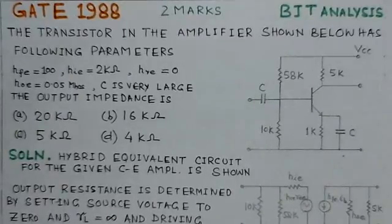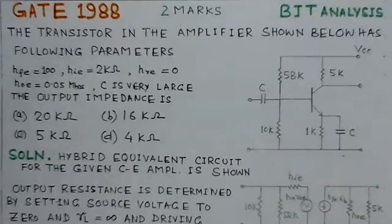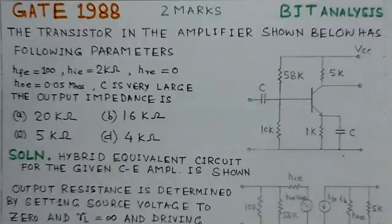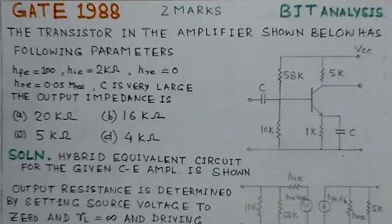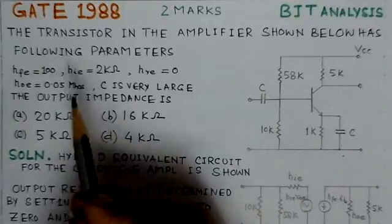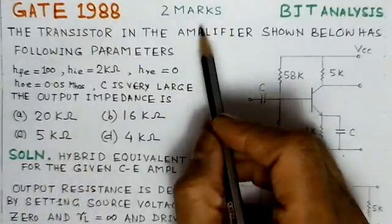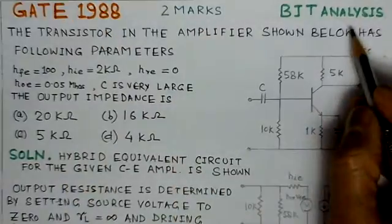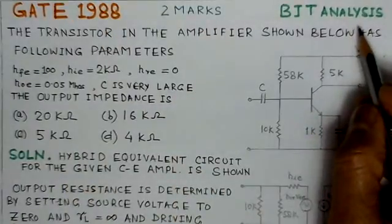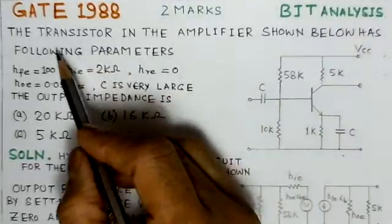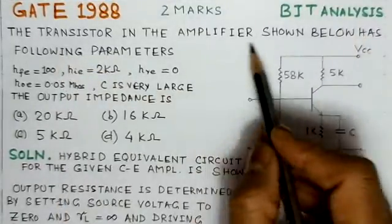This is the last and fifth problem of GATE on BJT circuits. This is from GATE 1988, worth two marks, and focuses on BJT analysis. We'll read out the problem here: the transistor in the amplifier shown below has the following parameters.